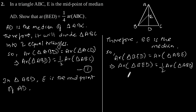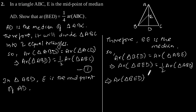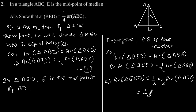Now, as we have proved in Equation 1, area of triangle ABD is equal to half of area of triangle ABC. Substituting this, we get area of triangle BED is equal to half of half of area of triangle ABC, which gives one-fourth of area of triangle ABC.